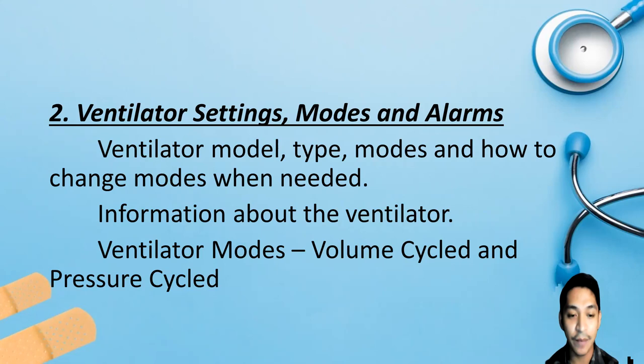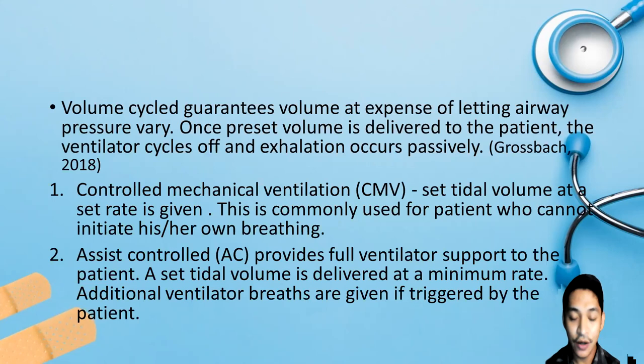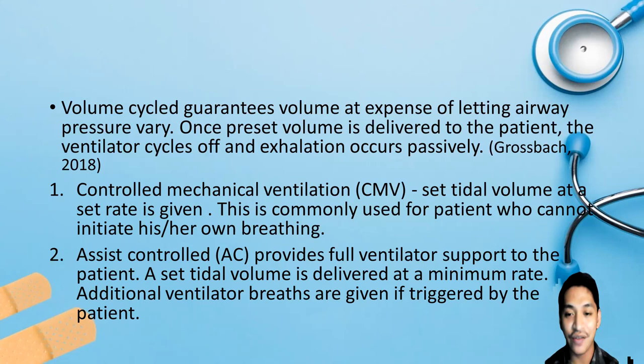We must locate suction equipment and review its use. Always have a bag valve mask available for every patient with an artificial airway, and know how to hyperventilate and hyperoxygenate our patient. Ventilator modes are divided into volume cycle and pressure cycle. The volume cycled mode guarantees volume at the expense of letting airway pressure vary. The CMV mode, or controlled mechanical ventilation, delivers a set tidal volume at a set rate and is commonly used for patients who cannot initiate their own breathing.